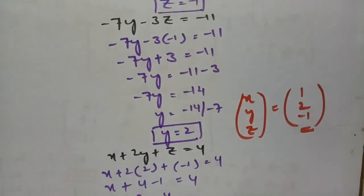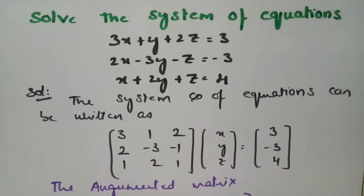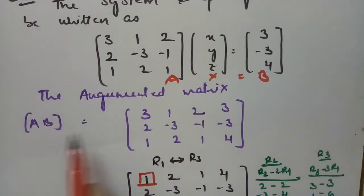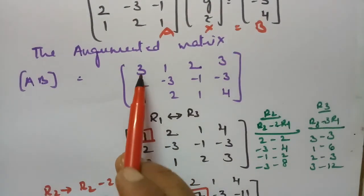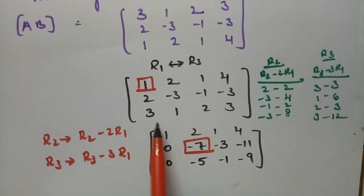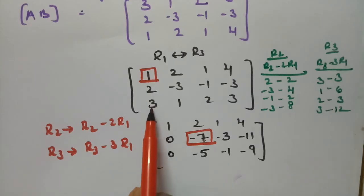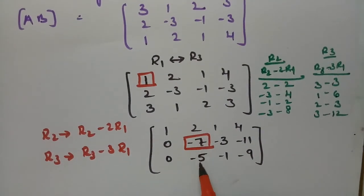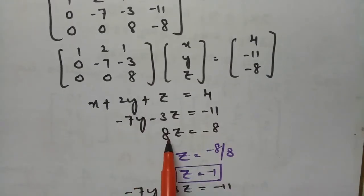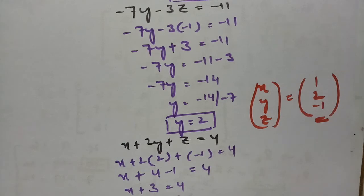So the solution is x = 1, y = 2, z = minus 1. This is how we solve using Gauss elimination method. The process is: write in the form Ax = b, form the augmented matrix, interchange rows for convenience, use diagonal elements to eliminate entries below them to zero, then back-substitute to find x, y, and z. Thank you so much for staying till the end — if you liked it, please give a thumbs up and share with your friends.